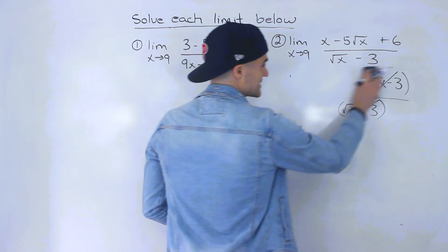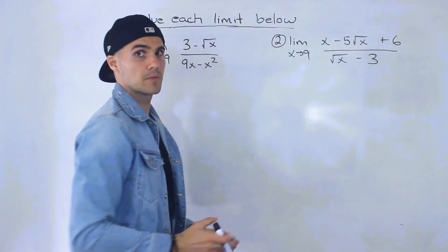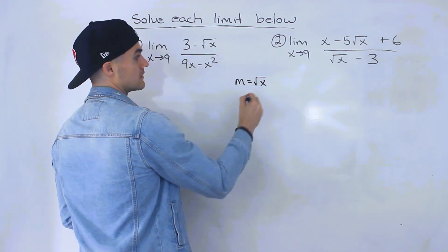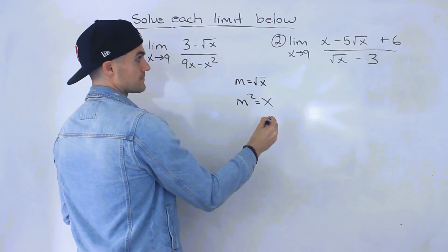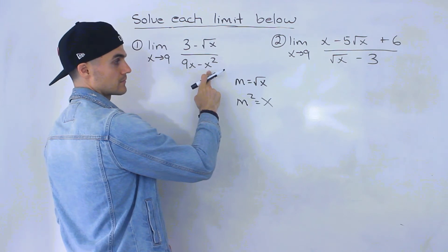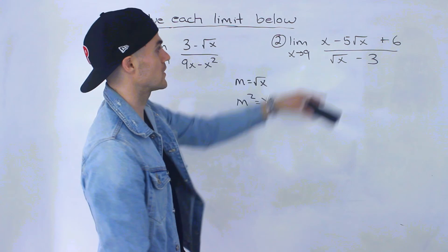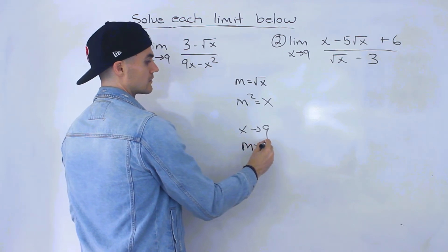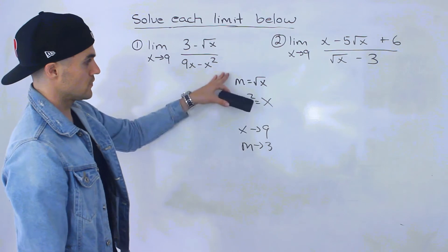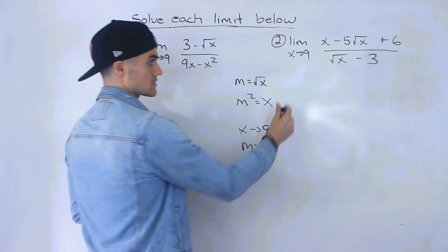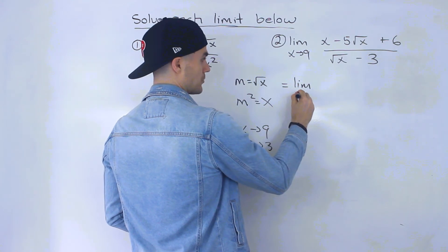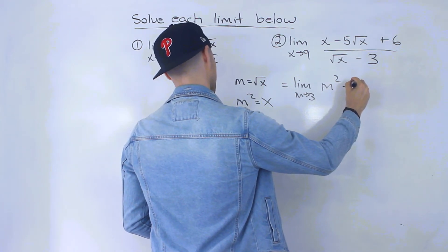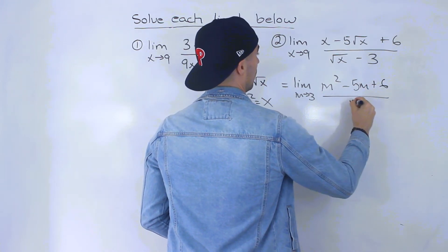Rationalization would get really messy. For this one, I recommend a change of variable. Let m equal root x, so m squared equals x. We don't have to deal with x squared like before, no m to the power of 4. As x approaches 9, m approaches 3 because the square root of 9 is 3. Doing these substitutions, we get the limit as m approaches 3 of m squared minus 5m plus 6 over m minus 3.